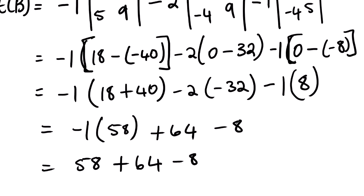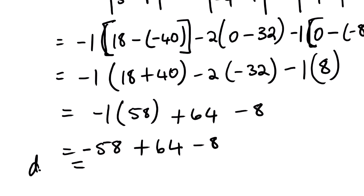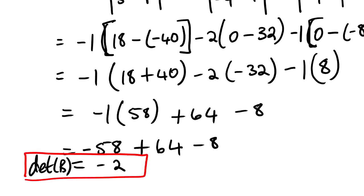Wait — there is a correction: negative one multiplied by fifty-eight is actually negative fifty-eight. So it is negative fifty-eight plus sixty-four minus eight. The determinant is negative two. This is how we apply the Cofactor Method to determine the determinant of a 3x3 matrix. This is Wahoula SJ — thank you very much.